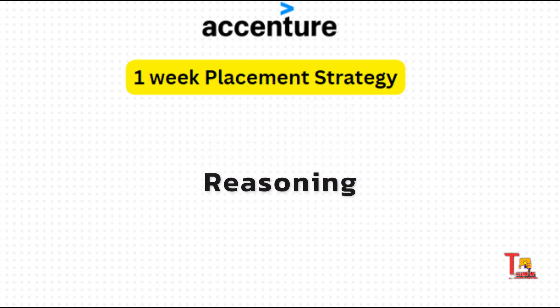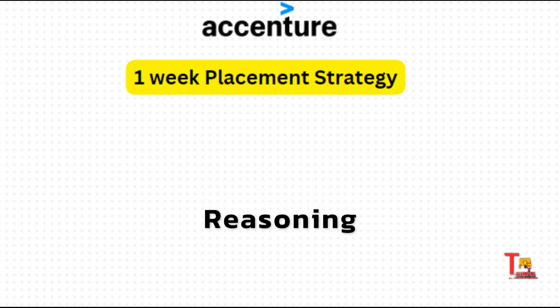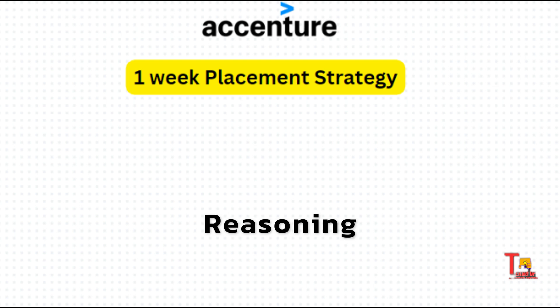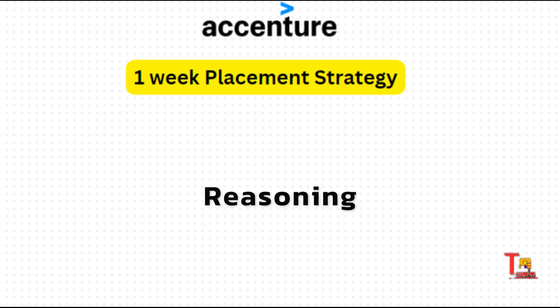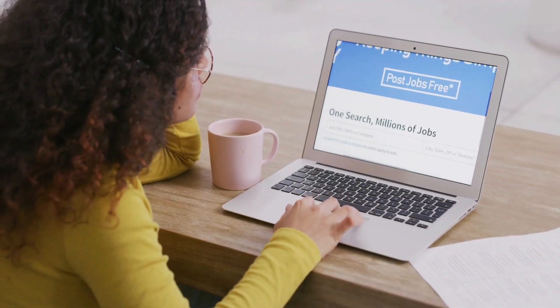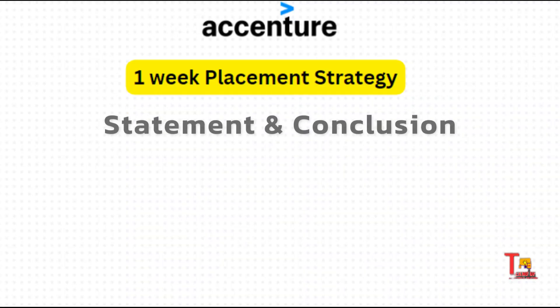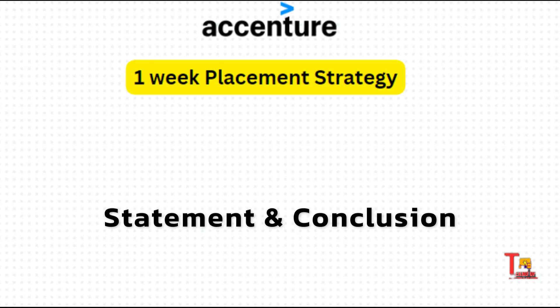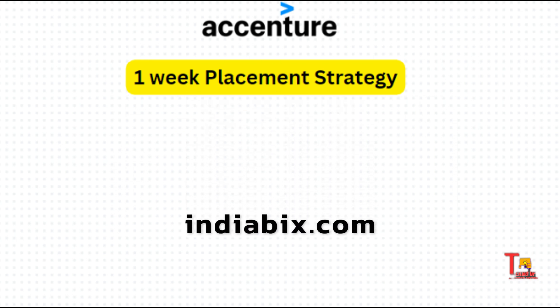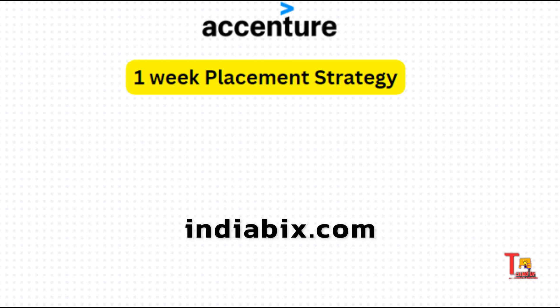Now let's talk about reasoning. I have seen that most candidates leave flowchart questions just seeing the length of the questions. But the fact is, this is the easiest problem in the abstract reasoning section and you can score five out of five from the flowchart — just use pen and paper and it will be sorted. Since you have to score a minimum of 70% marks from each section, you can skip one to two questions that take more time. I would suggest skipping statement and conclusion questions or any questions that take more time than usual. You can prepare this reasoning section from indiabix.com as well as from the free materials link given in the description box.